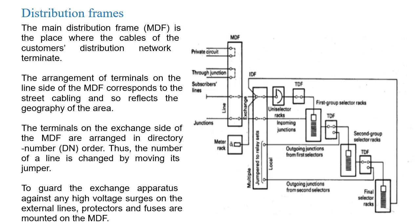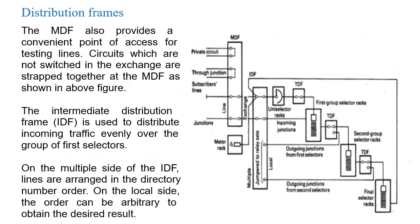Thus, the number of a line is changed by moving its jumper. To guard the exchange apparatus against any high voltage surges on the external lines, protectors and fuses are mounted on the MDF. The MDF also provides a convenient point of access for testing lines. Circuits which are not switched in the exchange are strapped together at the MDF, as shown in the figure.